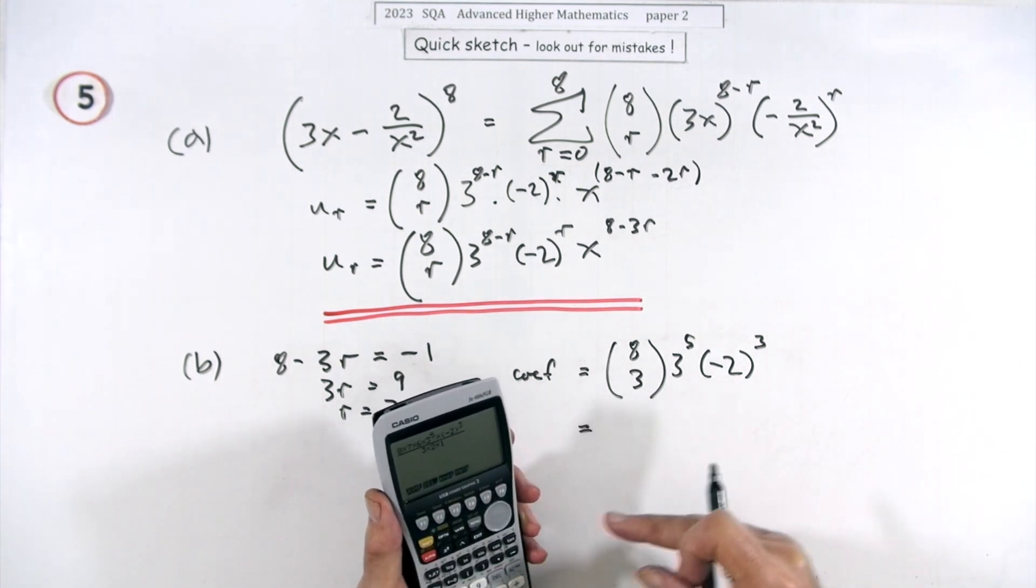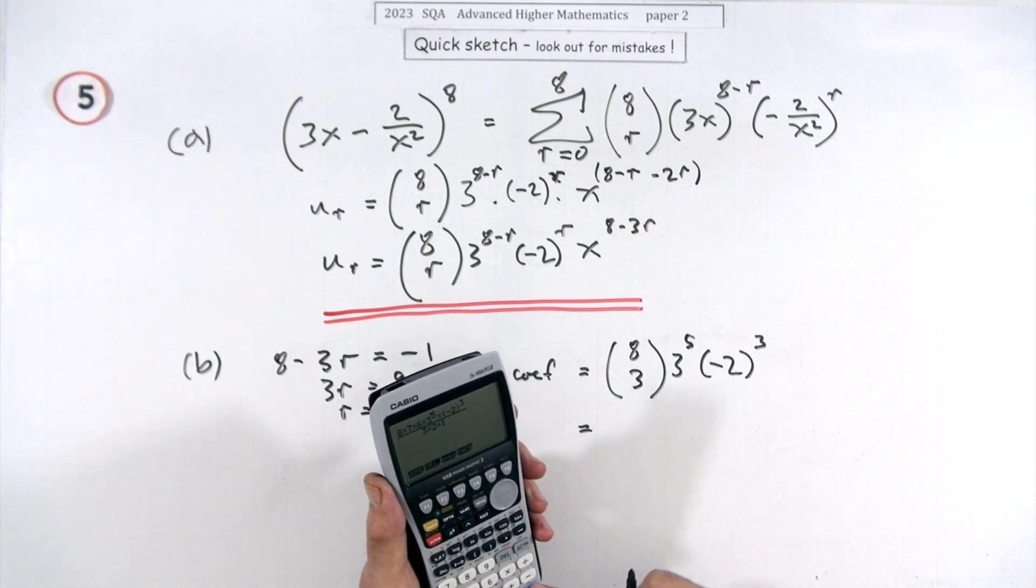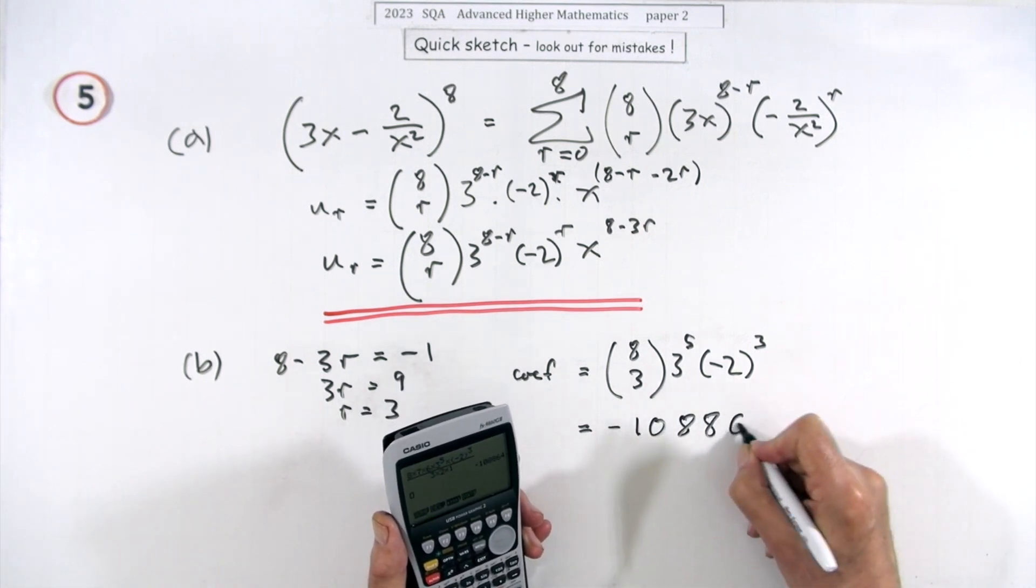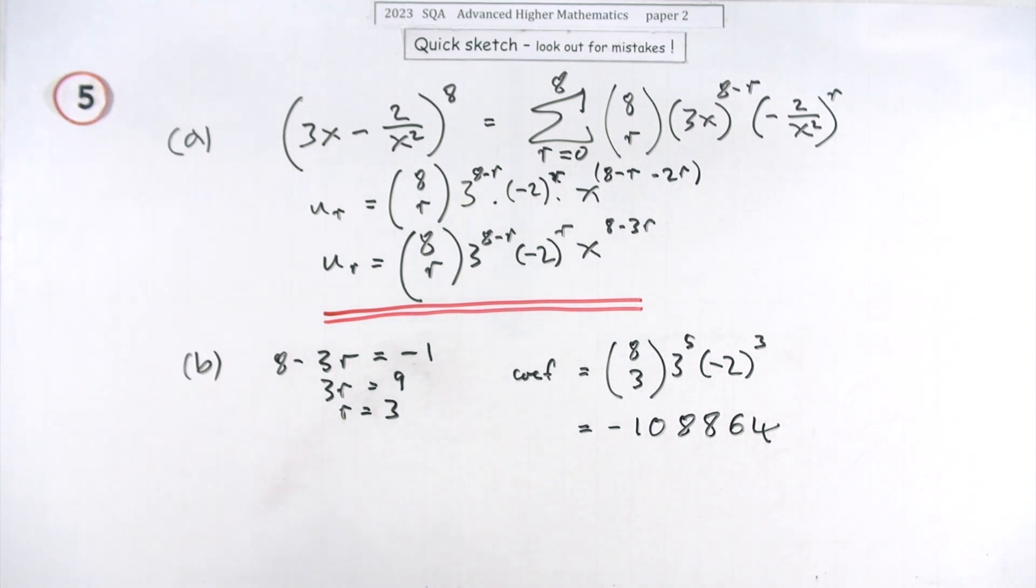So putting that in, couldn't find a combinations button for this, seems odd. Pressing the button you get negative one eight eight six four for the coefficient.